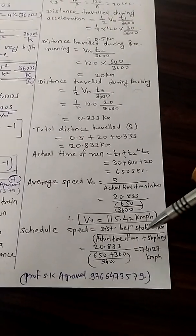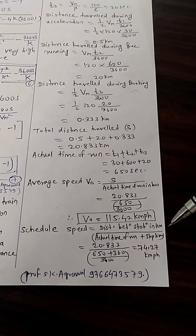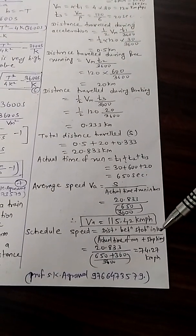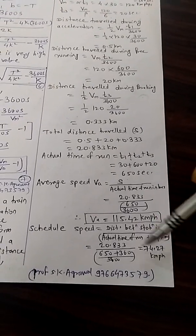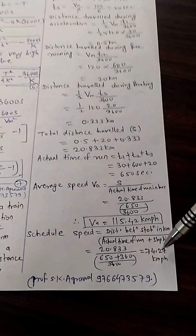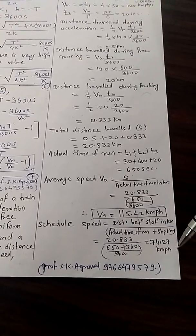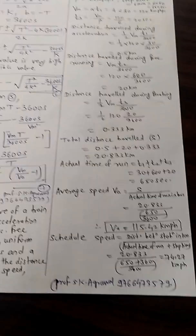Now schedule speed. Please remember the schedule speed. The formula is distance between stations in kilometers divided by total time, that is actual time of run plus stop time. So the schedule speed is here 74.27 kmph, km per hour. Yes, kmph.